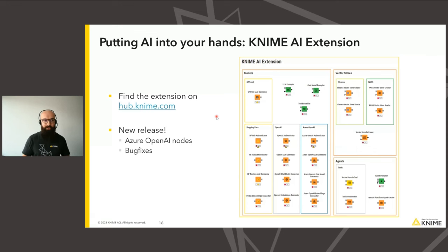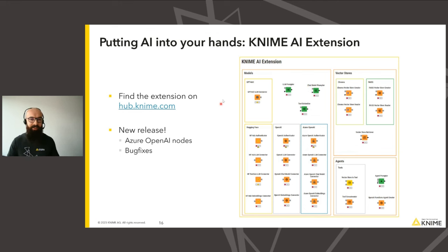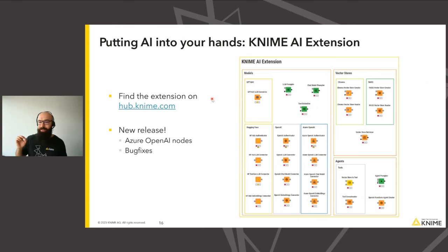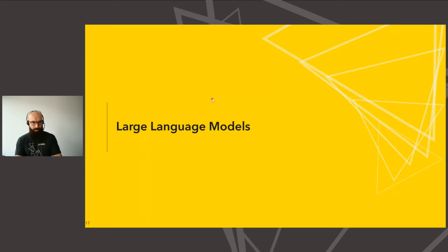What we are going to do today is build a bunch of data apps that use AI to give you an idea how easy it is to integrate that into your own KNIME workflows. The nodes we're going to use are from the KNIME AI extension. Great news: we just released a new version today. As of today, we have support for Azure OpenAI nodes. If you already have the extension installed, you should receive an update in your 5.1.2 analytics platform installation. If you don't have them yet, head to hub.knime.com where you can find and download them.